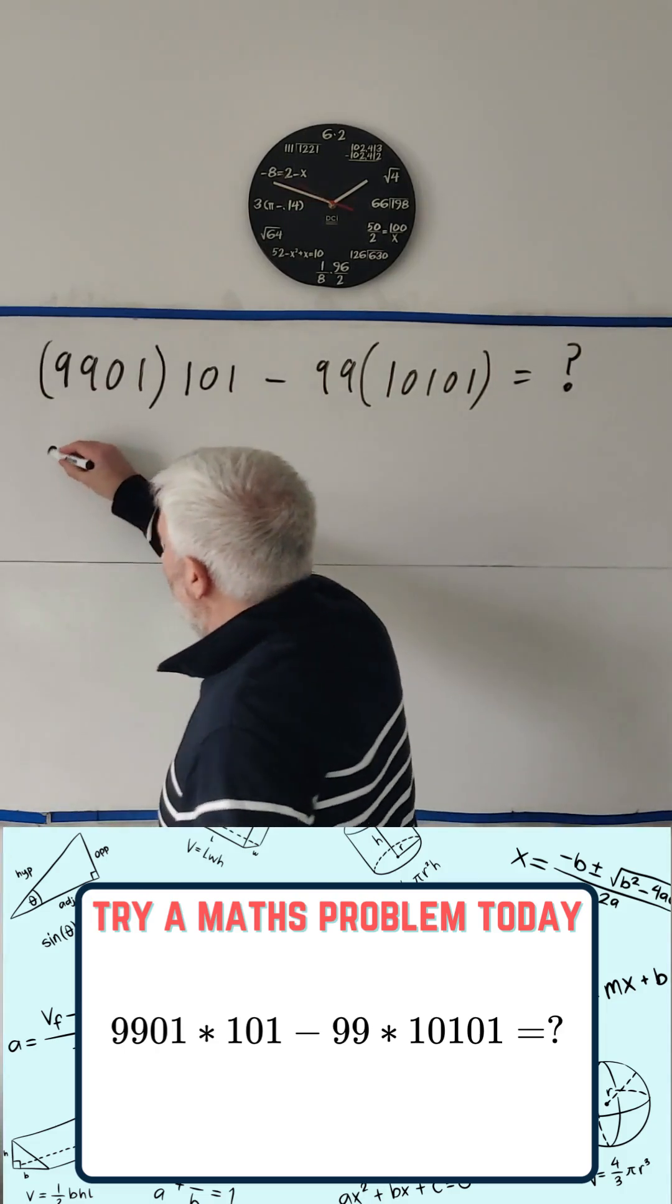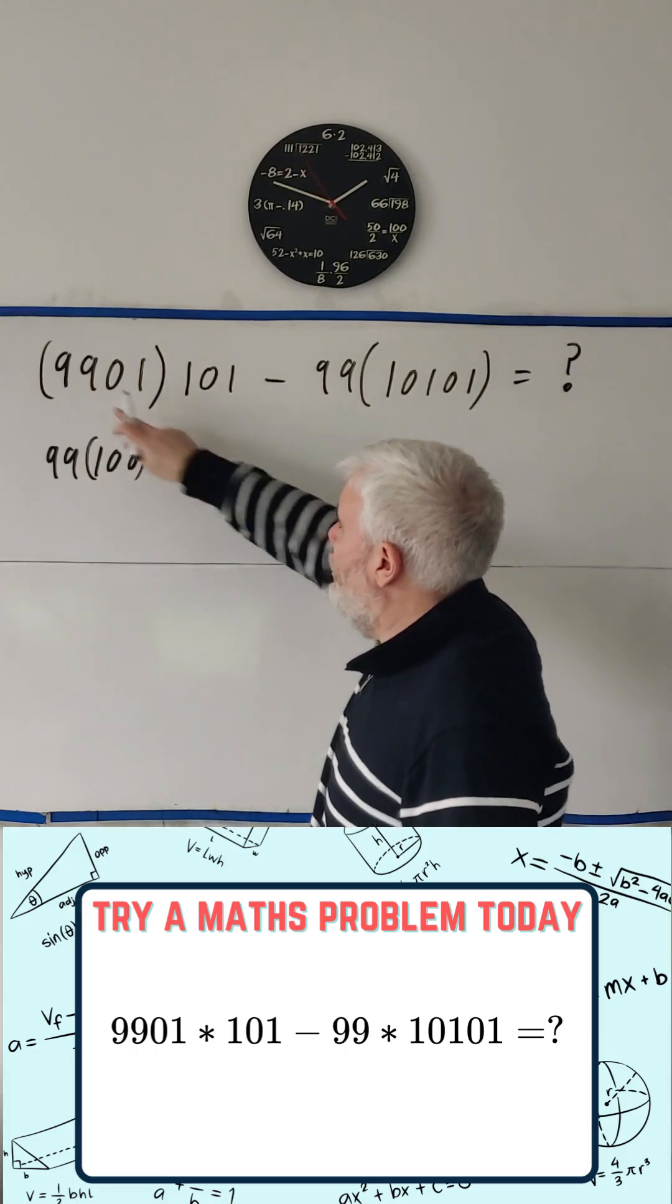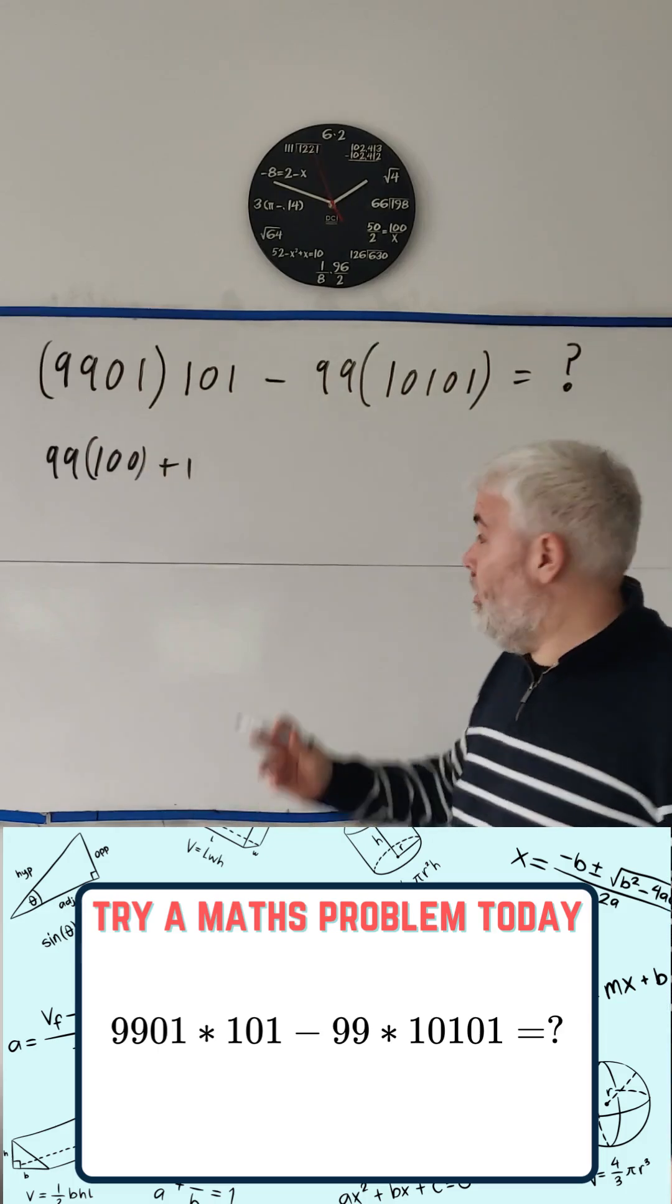I see a 99 here. I'm going to rewrite that as 99 times 100 plus 1. That will give me 9901,